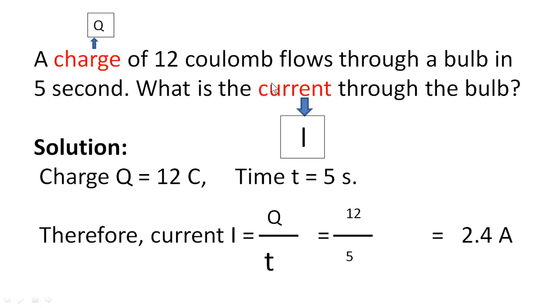Look at this problem: A charge of 12 coulomb flows through a bulb in 5 seconds. What is the current through the bulb? Now you have to find out what are the important terms given. Charge - it is Q, and current - the related letter is I. What is the basic relation between Q and I? Q is equal to It.